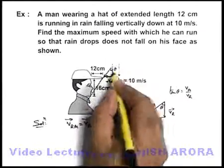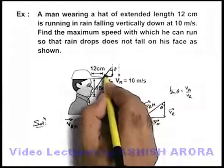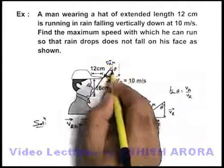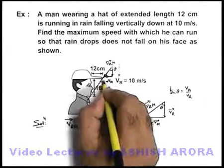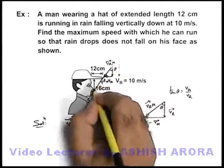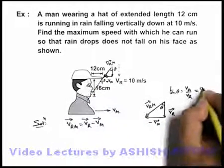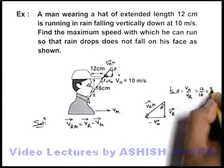So this is the angle theta made by the velocity of rain with respect to man with the vertical, should be equal to the same this angle theta. So here we can write tan theta is equal to 12 by 16, or it is 3 by 4.